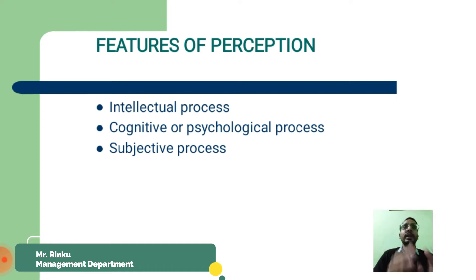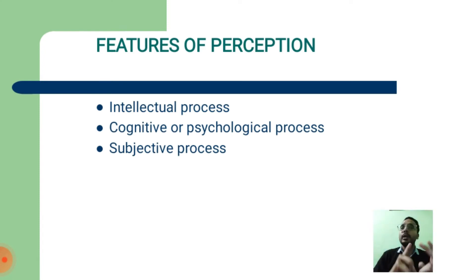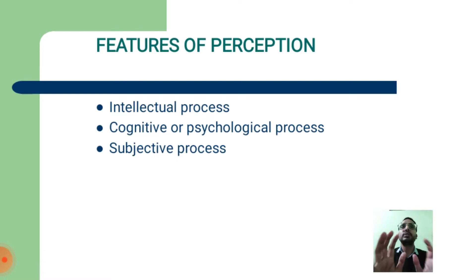Features of perception. First, it is an intellectual process — perception requires brain and intelligence at every step. Second, perception is a process of activity of the individual. Third, it is a subjective process. Perception is a unique interpersonal interpretation of a real situation and not an actual representation of reality. It is not a photocopy but only a description of an objective event according to the understanding level of the individual.